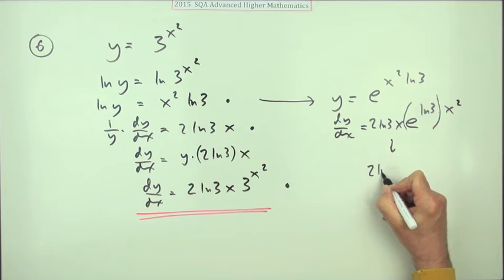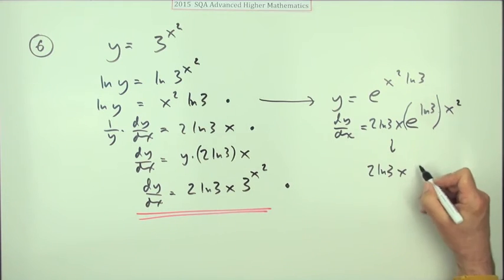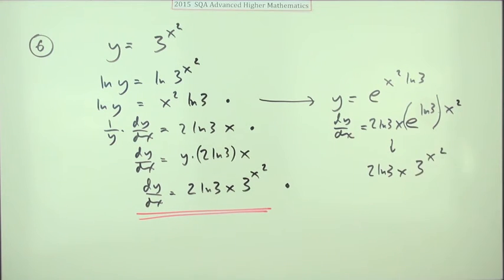Because this part here is just the number 3, so that should really have gone down to 2 ln 3 x and as before 3 to the power x squared. So I don't know why they left the last mark here when that was quite clearly crying out to be tidied up.